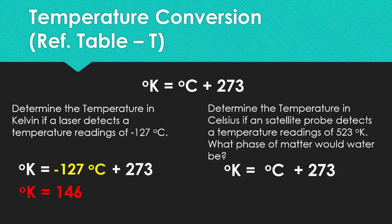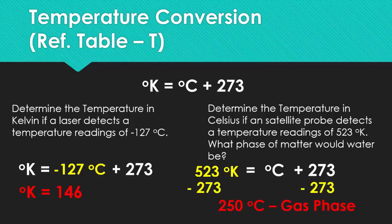Determine the temperature in Celsius if a satellite probe detects a temperature reading of 523 Kelvin — and what phase of matter would water be in? Plug in 523 and subtract 273, giving us 250 degrees Celsius. This is definitely the gas phase because at 100 degrees Celsius water will boil and become a gas.